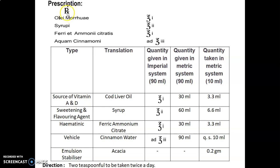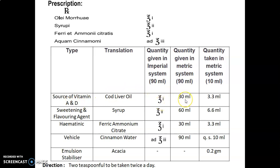The prescription is given in Latin, denoted by the symbol Rx. The formula table shows type (name/role of ingredient), translation (name of ingredient), quantity given in imperial system for 90 ml, quantity given in metric system to prepare up to 90 ml, and quantity taken in metric system to prepare up to 10 ml. Cod liver oil (source of vitamin A and D): 1 ounce = 30 ml × 1 = 30 ml; quantity taken = 3.3 ml, calculated with the help of the factor.